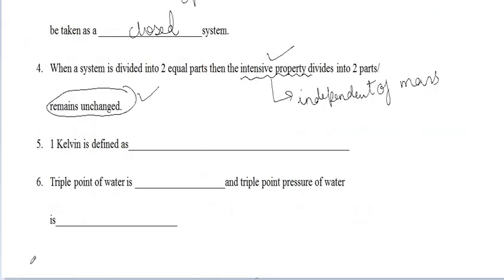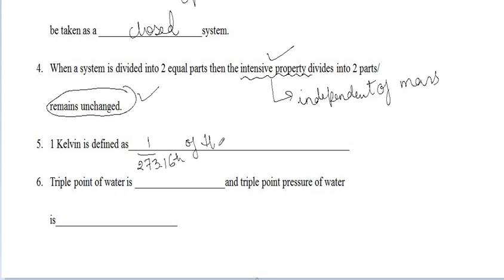The next question: 1 Kelvin is defined as? From the theory lectures, 1 Kelvin is defined as 1/273.16 of the triple point of water.